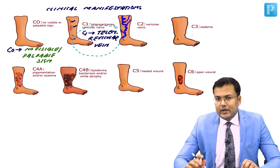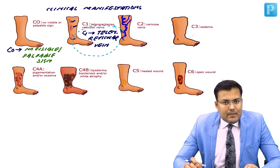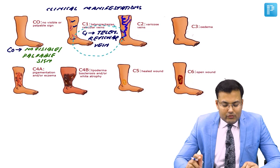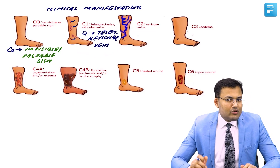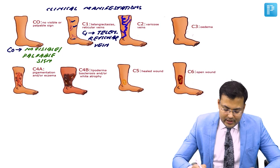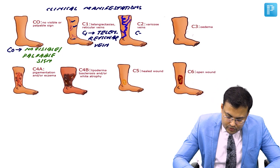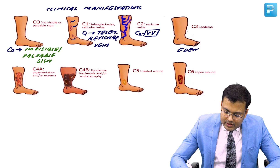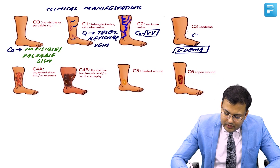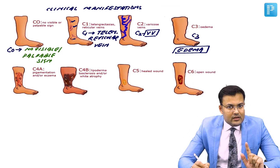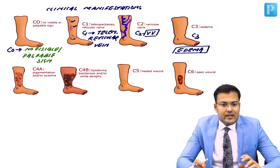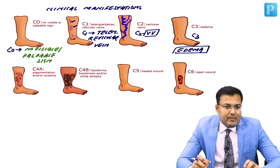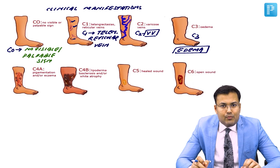C2 is varicose vein. If there is edema, it is included in C3. In INICET, the question asked about lipodermatosclerosis, which is included in C4. So to remember: C2 is varicose vein, C3 is edema, and C4 is where complications begin — hyperpigmentation, eczema, and lipodermatosclerosis.